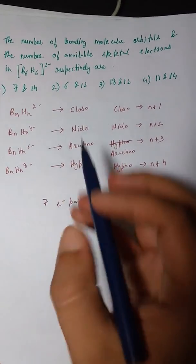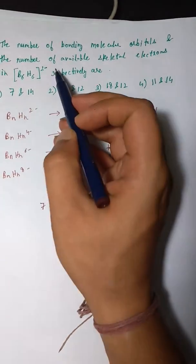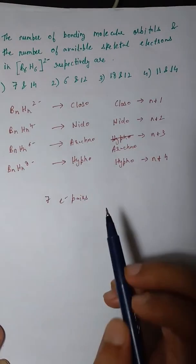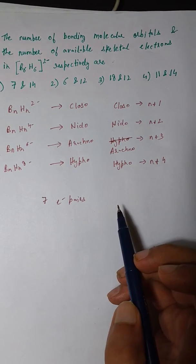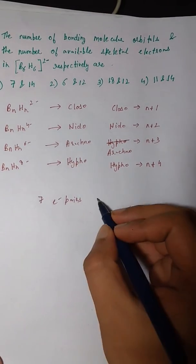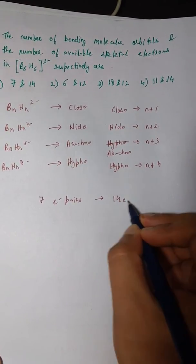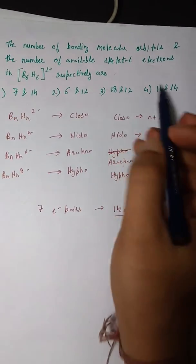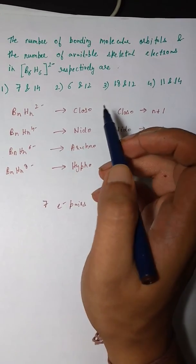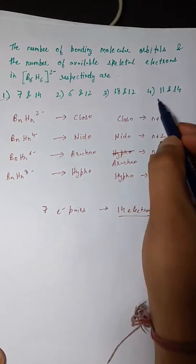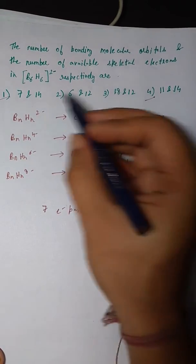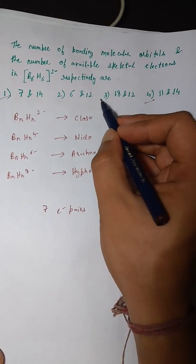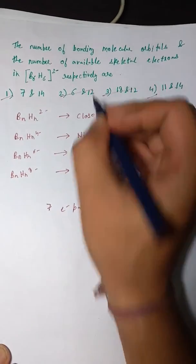The question asks for the total number of skeletal electrons, not pairs. So there are 7 pairs × 2 = 14 electrons present. This narrows the answer to either the first or the fourth option, both of which have 14 electrons. We can cancel out options 2 and 3.